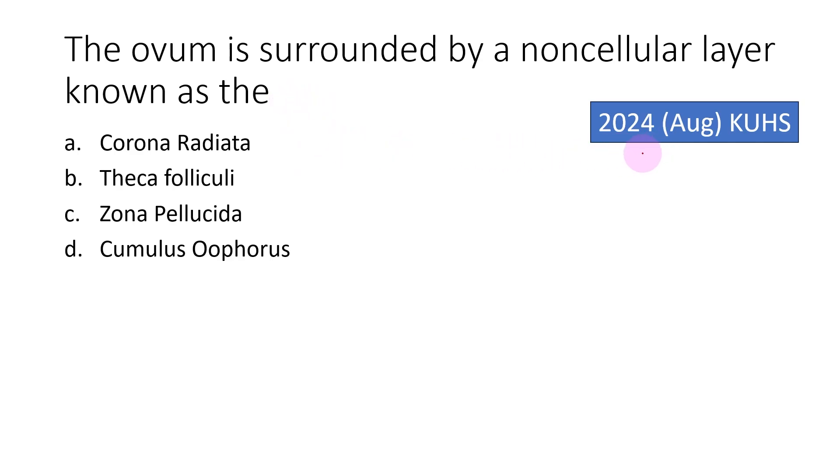This question was asked in the 2024 August KUHS examination as an MCQ. The ovum is surrounded by a non-cellular layer known as the corona radiata, theca folliculi, zona pellucida or cumulus oophorus.